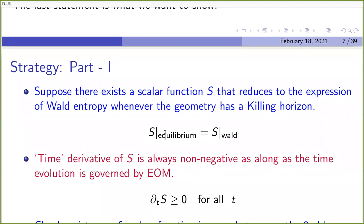Question: What is a killing horizon? Answer: A killing horizon is a horizon — a null hypersurface — where the null generator of the horizon turns out to be a killing vector of the full spacetime.